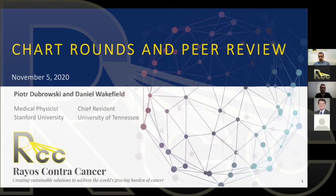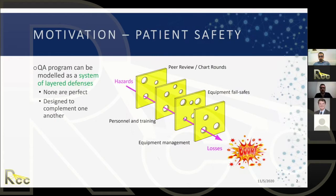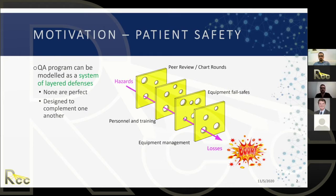I'm going to reuse some slides from past lessons about QA because this all works closely together. Peer review at chart rounds is a big part of the QA program. You've seen this slide — our QA program in radiation therapy can be modeled as slices of cheese, where each test or check is a slice with holes, and the idea is that these holes never line up to let an error go through.